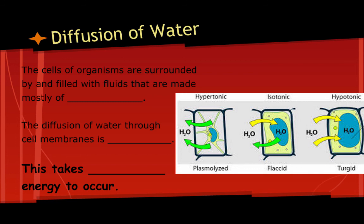The diffusion of water through the cell membrane is known as osmosis. Osmosis takes no energy to occur, so it's exactly the same as diffusion — it is diffusion, but specifically the diffusion of water.